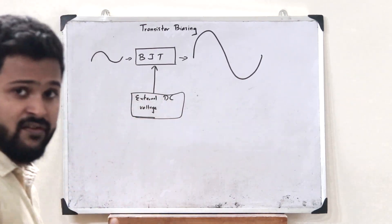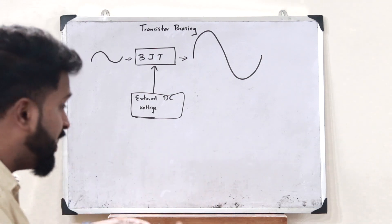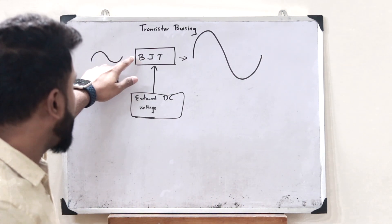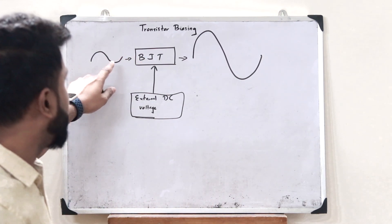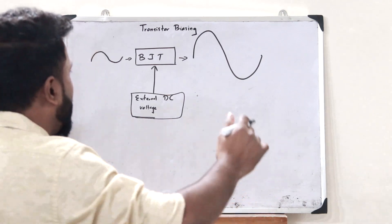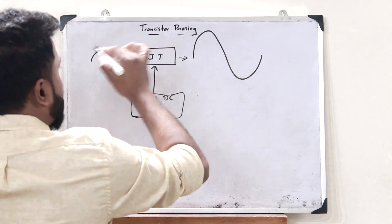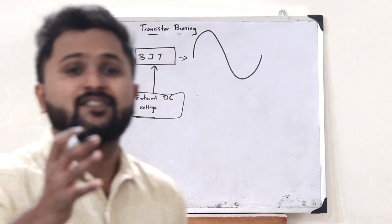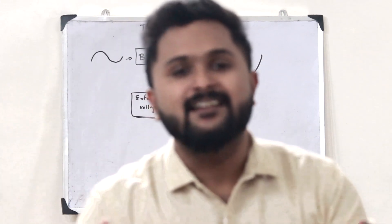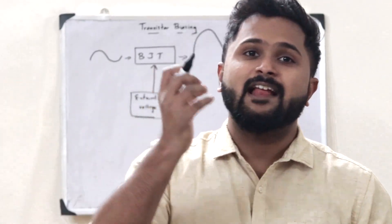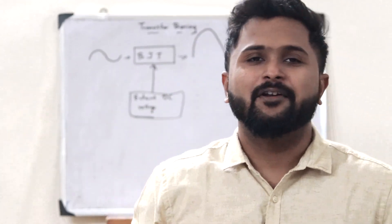This process of applying a biasing voltage to a BJT in order to amplify a signal is simply what you refer to as transistor biasing. This is why we need to bias a particular transistor — we bias it so that we can help it amplify a particular time-varying signal.